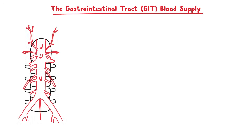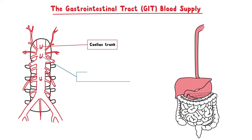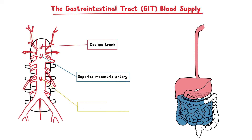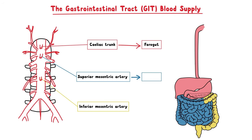The three anterior branches of the abdominal aorta — the celiac trunk, the superior mesenteric artery, and the inferior mesenteric artery — are very important as they supply the gastrointestinal tract. In summary, the celiac trunk supplies the foregut, the superior mesenteric artery supplies the midgut, and the inferior mesenteric artery supplies the hindgut.